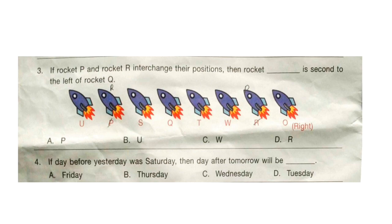Question 4: If the day before yesterday was Saturday, then the day after tomorrow will be dash. The correct answer is option C — Wednesday. Day before yesterday was Saturday, so yesterday was Sunday and today is Monday. Tomorrow will be Tuesday, and the day after tomorrow will be Wednesday.